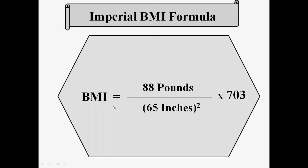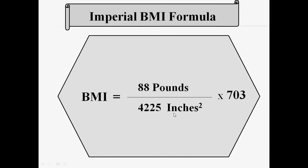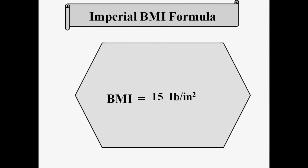Now let's put these measurements into the formula. BMI equals 88 pounds divided by 65 inches squared, multiplied by 703. The square of 65 means 65 multiplied by 65, which gives 4,225. Then divide 88 by 4,225, which gives approximately 0.02. Multiplying this result by 703 gives the BMI of approximately 15. So the BMI of Ishaal is 15.